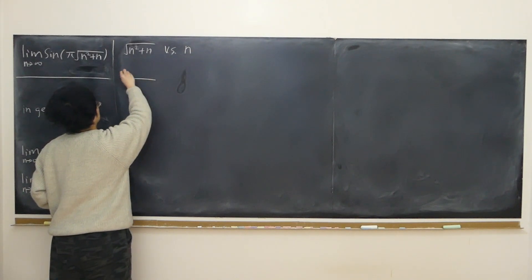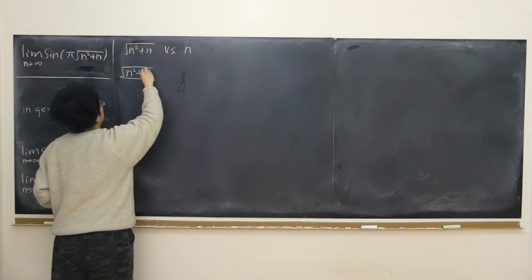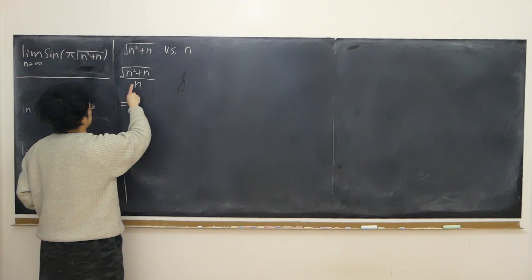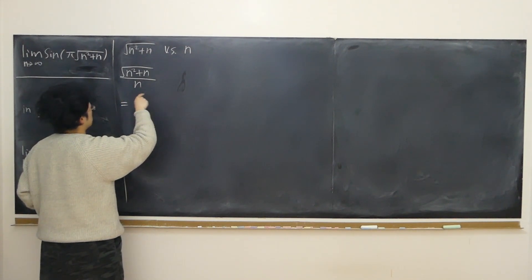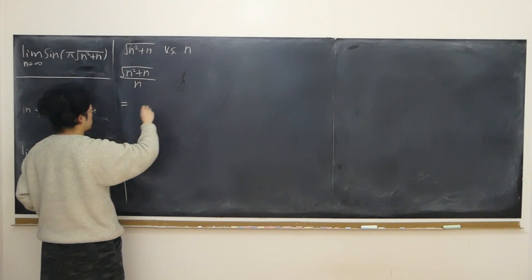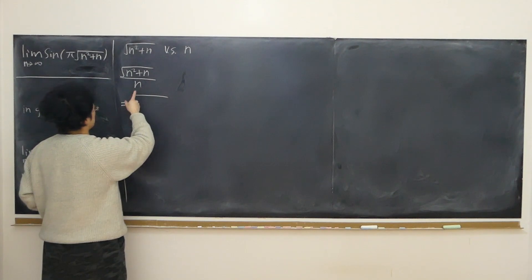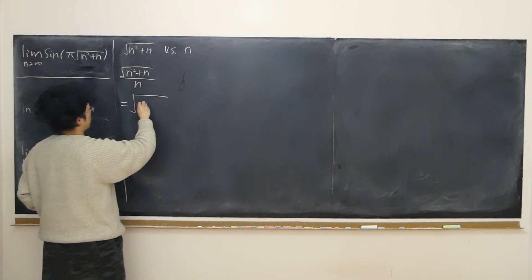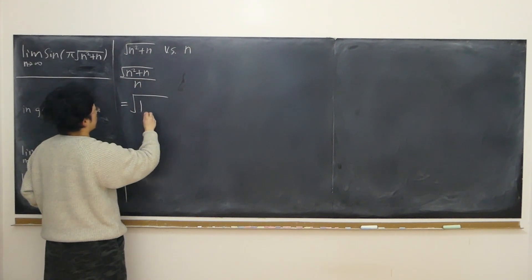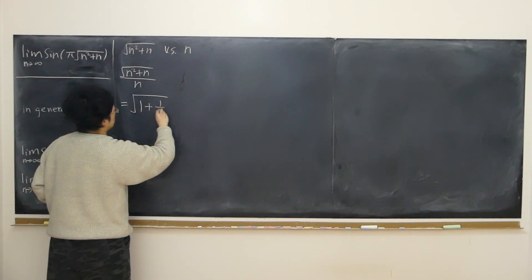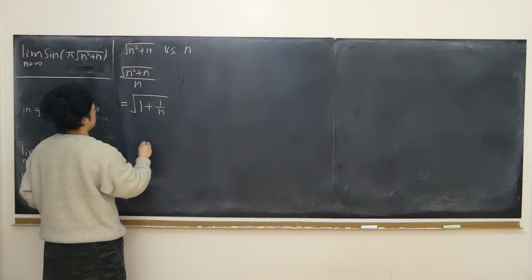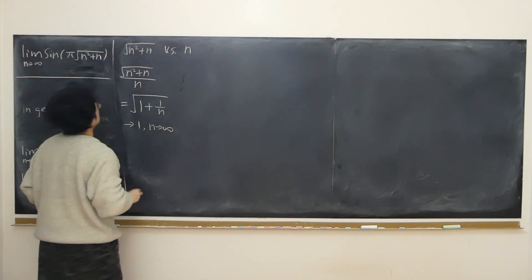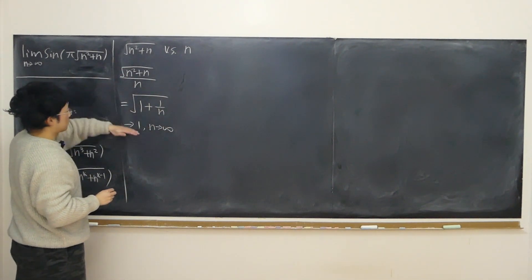First, I'm going to look at their ratio. The square root of n squared plus n over n equals, if I rewrite n as square root of n squared, then the division happens inside: square root of (n squared plus n) over n squared equals square root of 1 plus 1/n, which easily approaches 1. So they approach infinity at exactly the same speed.